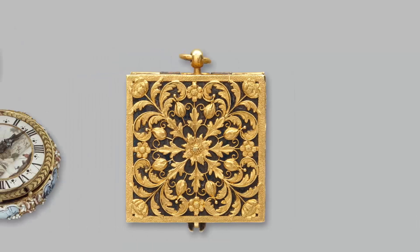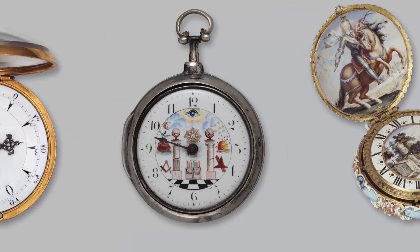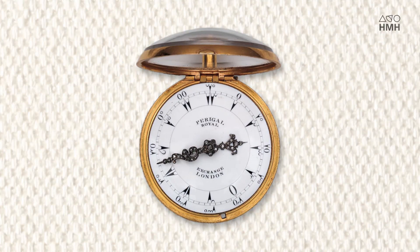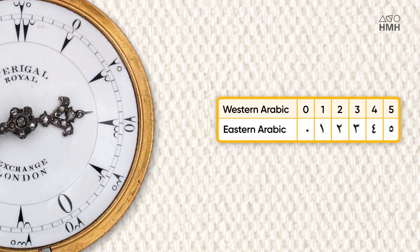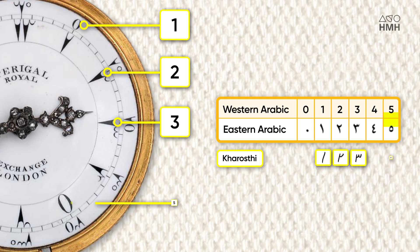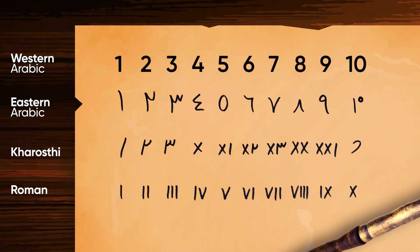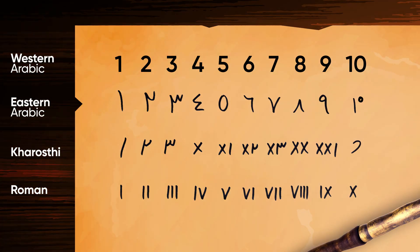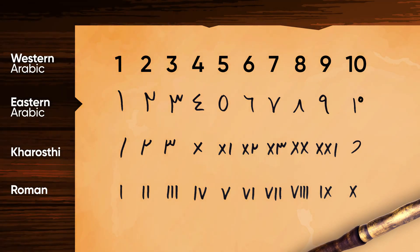But the Met spans the whole world, and its collection includes watches with even more surprising numbers. This one is from around 1770, where Paragol Royal, a fine European watchmaker, designed it to be exported to places that use Eastern Arabic numerals. Eastern Arabic numerals look very much like Karasthi numerals for 1 through 3, and their 5 looks a lot like our 0.